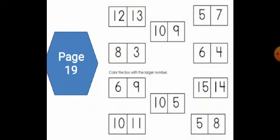Open your revision sheet page 19 and try to do it with me. Here we have two numbers and we need to circle the bigger number. Look at number 1 — we have 12 and 13. Which number is bigger? Number 13 is bigger than 12. Number 2 — we have 8 and 3. Of course 8 is bigger than 3. Next we have 6 and 9 — of course 9 is bigger than 6. And we have 10 and 11 — it's 11, 11 is bigger than 10.